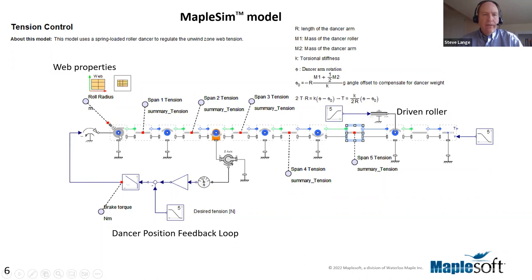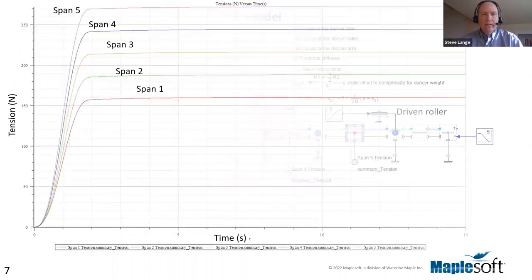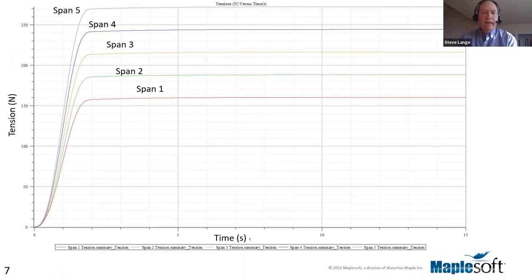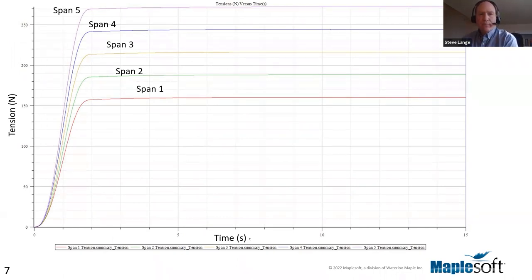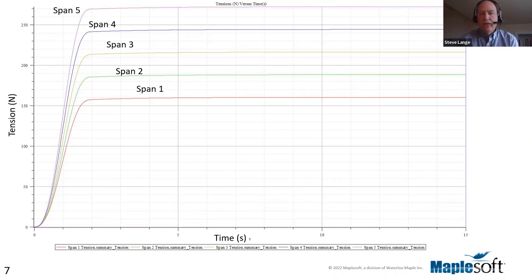The position of all the rollers is set by fixed elements defining their position in 3D space. When you run the simulation, one output could be a plot of the system dynamics over time — the tensions in each of the spans. It looks like a first-order response where, because of the ramp-up of the driven roller speed, tensions level out after 5 to 10 seconds. There's a difference in tension for each span due to bearing drag on each roller, and you also see effects of span length on the steady-state response.